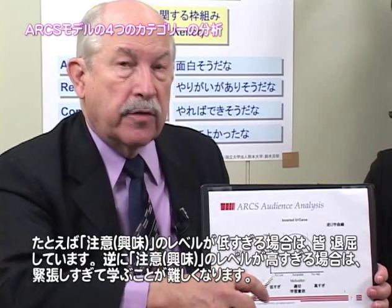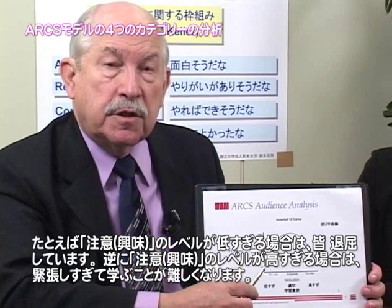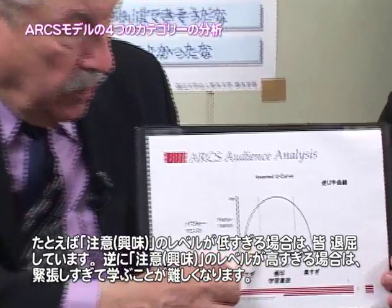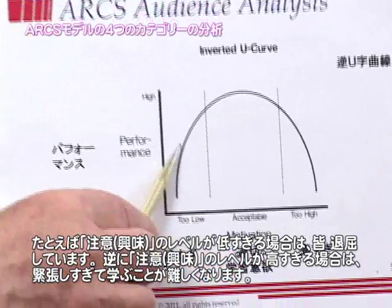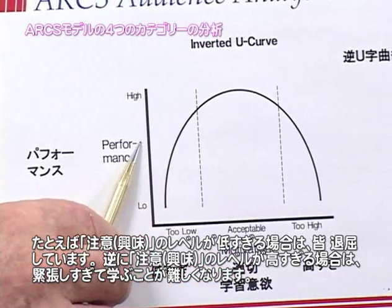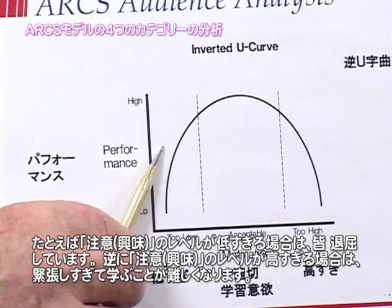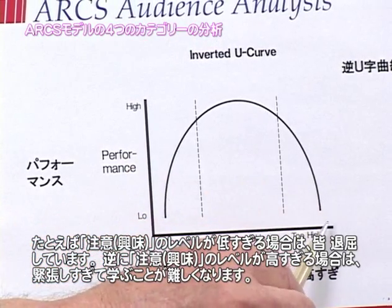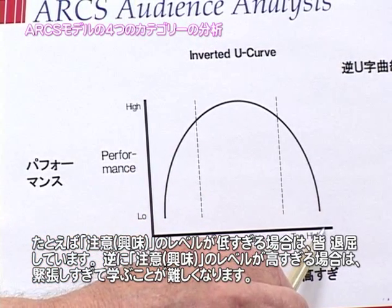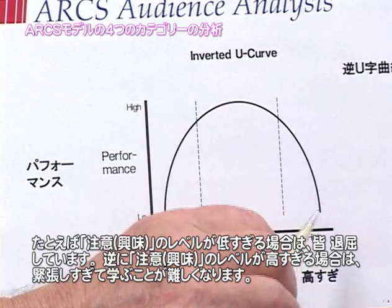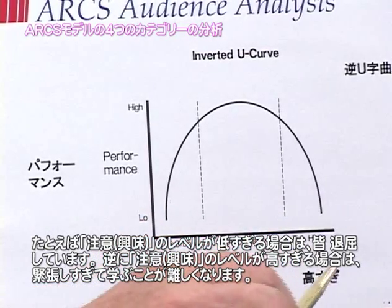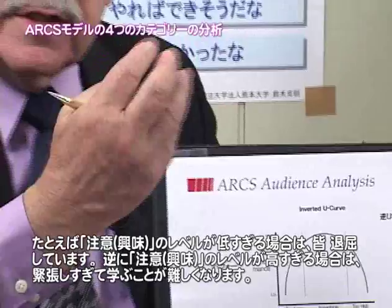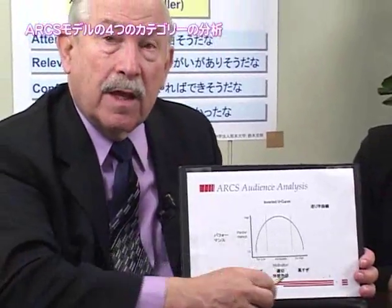So you have to decide whether the attention level or curiosity levels are too low. If it's too low, then they'll be bored — they won't be interested. On the other hand, if their attention level or curiosity levels are too high, they'll be nervous, they'll be looking all around, and it'll be very difficult for you to get their attention and keep their attention.